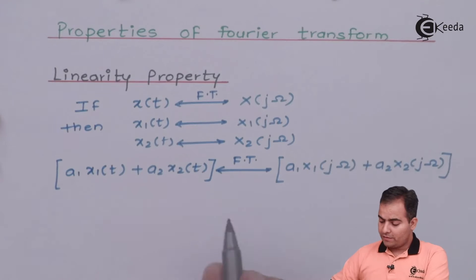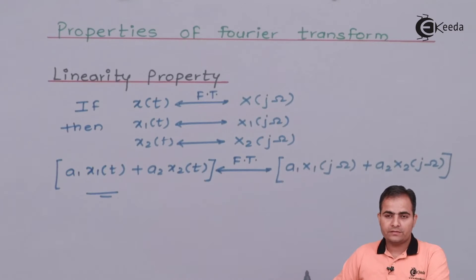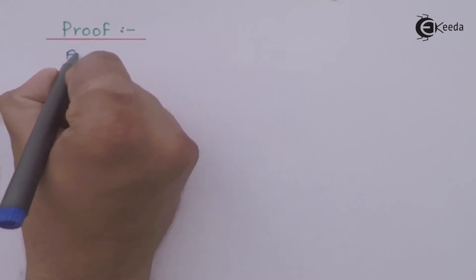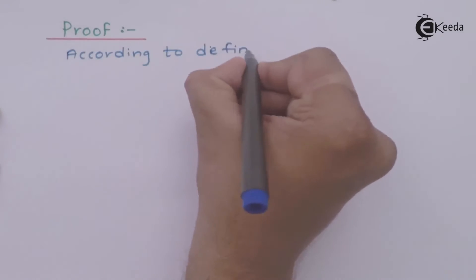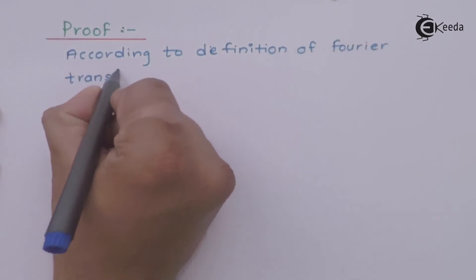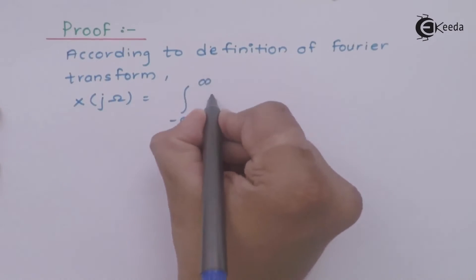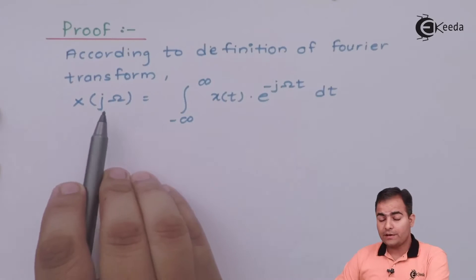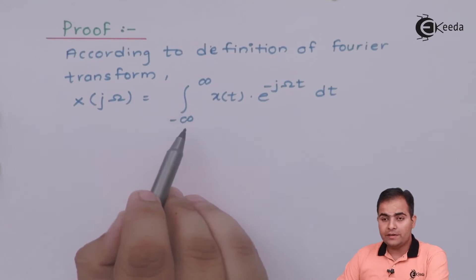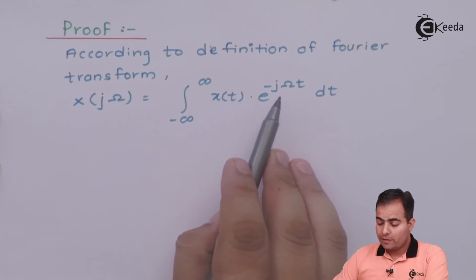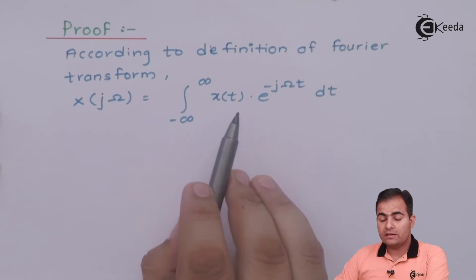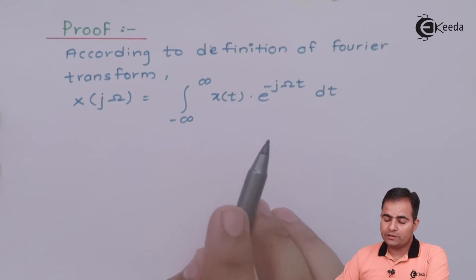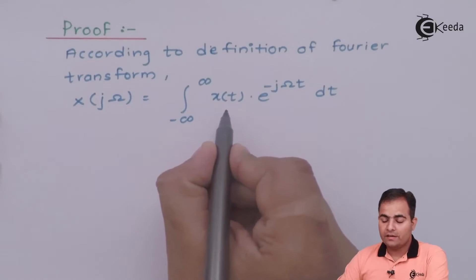This is our result. Now let's go through the proof. By the definition of Fourier transform, X(jω) — the Fourier transform of continuous-time signal x(t) — is represented by the integral from minus infinity to infinity of x(t) multiplied by e^(−jωt) dt. Here, x(t) is nothing but the combination of two functions x₁(t) and x₂(t), multiplied with constants a₁ and a₂ respectively, so we will substitute the function first.